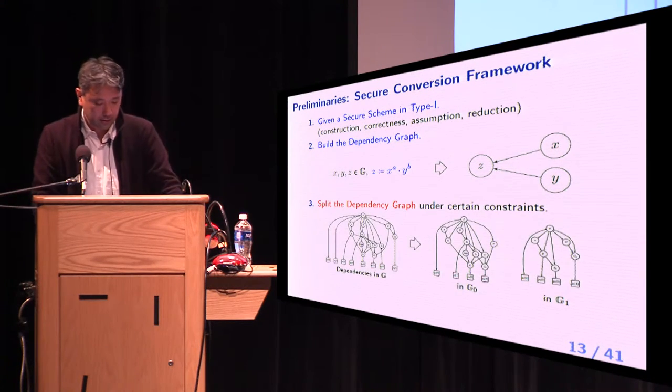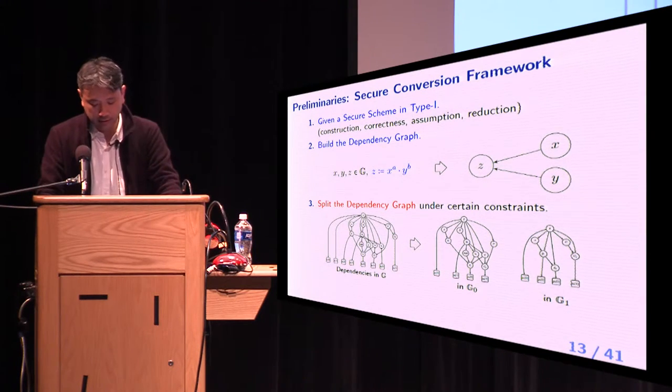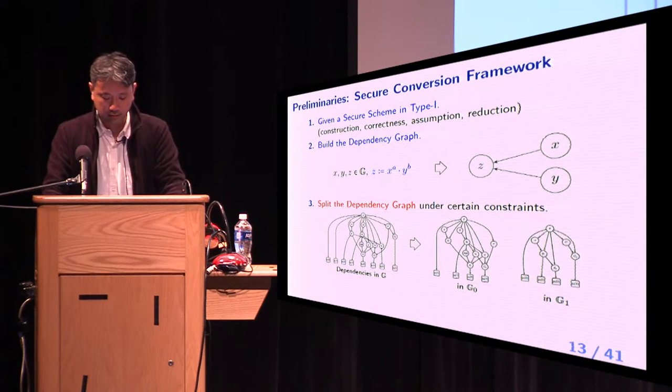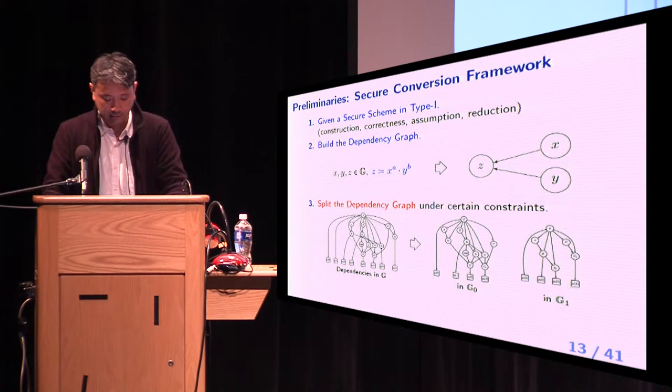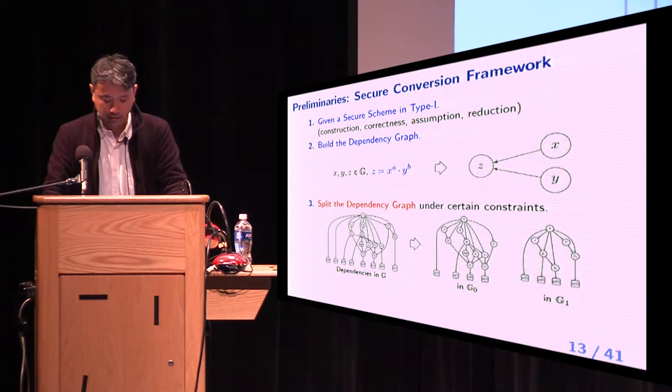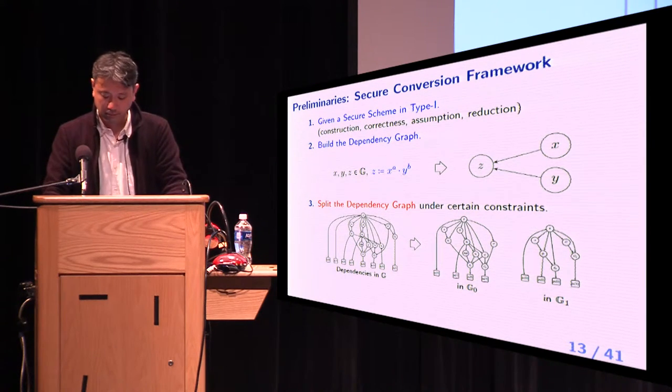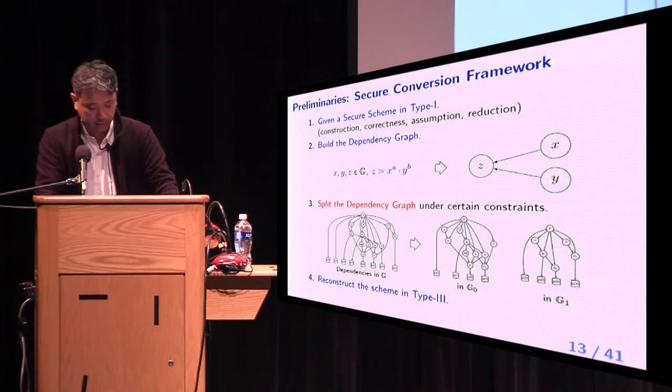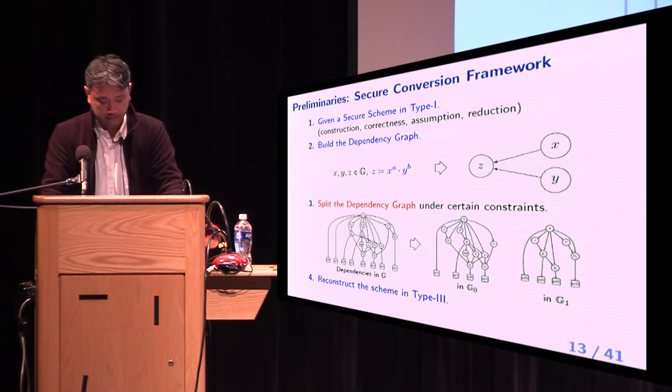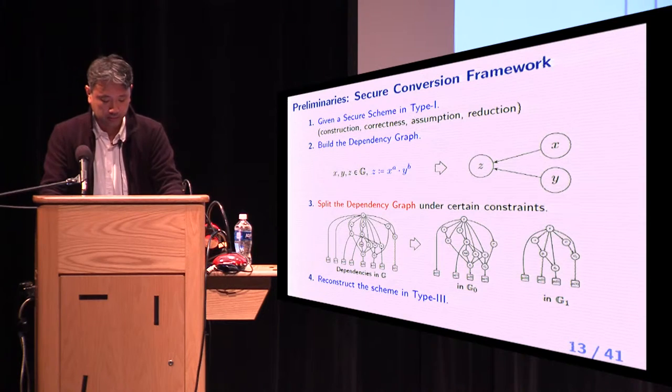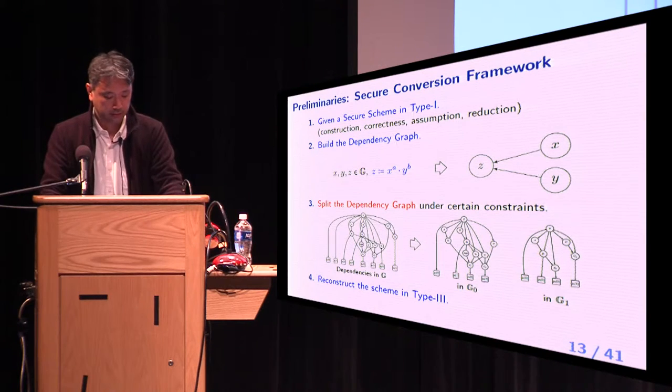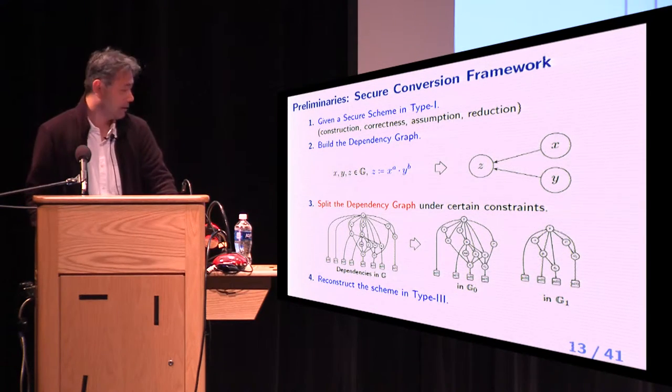Step 3, split the dependency graph under certain constraints. In this step, we must derive two subgraphs from the dependency graph. Each subgraph represents all the dependencies between source groups in type 3 scheme. And step 4, reconstructs the scheme in type 3 according to the split. All steps but splitting step are efficient. Therefore, we concentrate on splitting step after this slide.